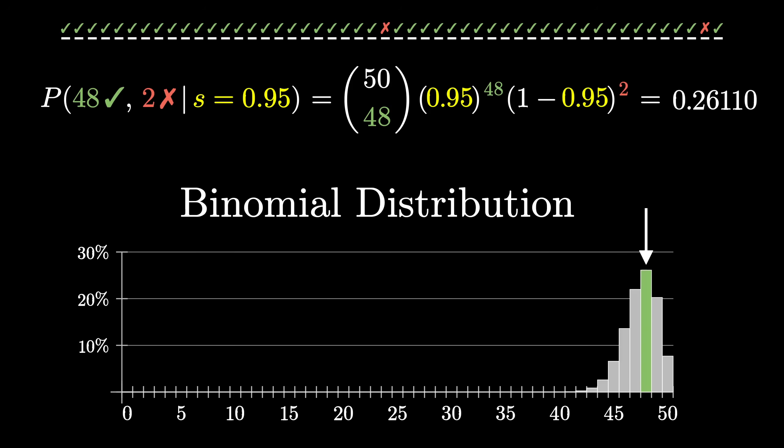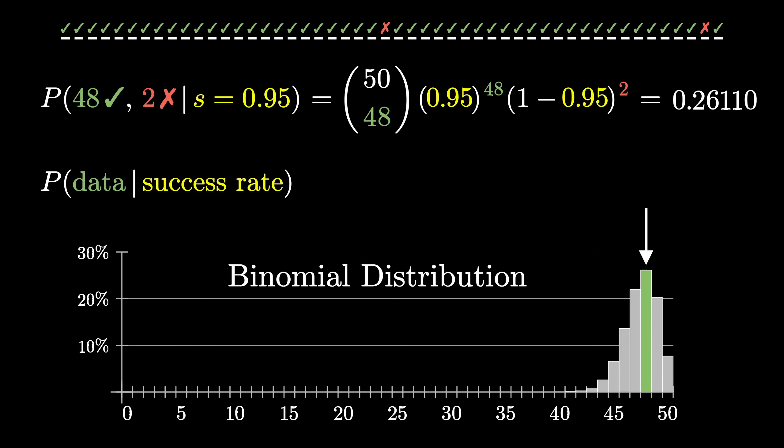For our purposes, this formula gives us the probability of seeing the data given an assumed success rate, which ultimately we want to somehow use to make judgments about the opposite, the probability of a success rate given the fixed data that we see. These are related, but definitely distinct.